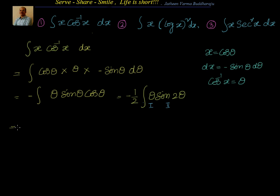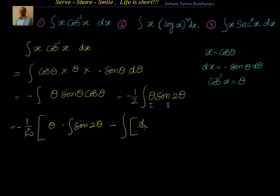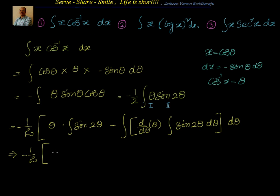Applying the formula: the next step will be −½ times [θ left as-is, multiplied by the integral of sin 2θ, minus the integral of (d/dθ of θ) multiplied by the integral of sin 2θ dθ]. The integral of sin 2θ is −cos 2θ / 2.